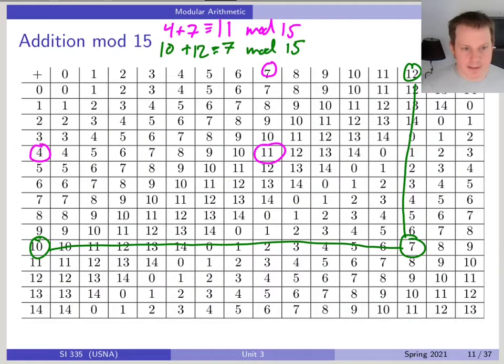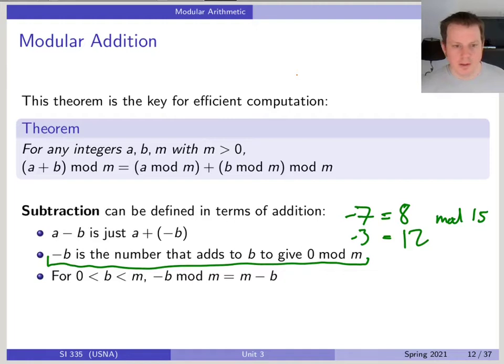We keep everything within this range of 0 up to m minus 1. Another way of looking at that is, I said negative 7 equals 8. We can see on this table that there's exactly one number which I would add to 7 which gives me 0, and that is 8. So that's why 8 is negative 7 mod 15. You can compute that by subtracting it from the modulus, or if it's 0, then negative 0 equals 0.